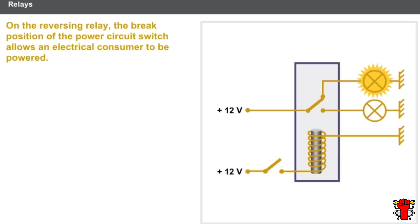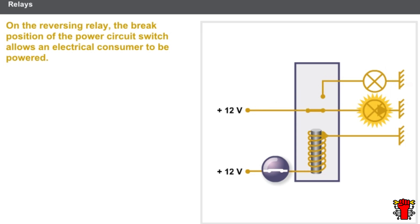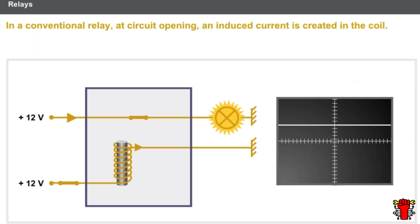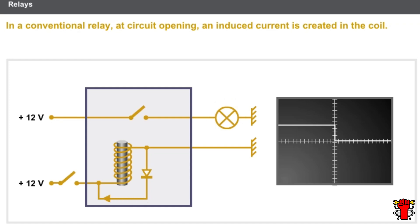Another type of relay is the reversing relay. On the reversing relay, the brake position of the power circuit switch allows an electrical consumer to be powered. There also exist diode relays. In a conventional relay, at circuit opening, an induced current is created in the coil. By connecting a diode in parallel with the coil, this induced current is consumed by the coil. A second diode is added to protect the inductor diode against polarity reversals.